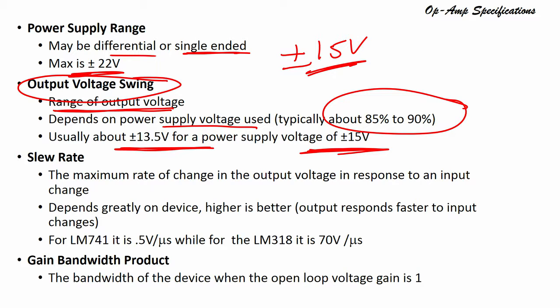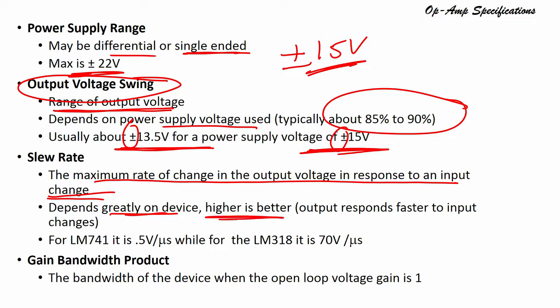Slew rate is the maximum rate of change of the output voltage in response to an input change. It depends greatly on the device — higher is better because a higher slew rate means the output responds faster to input changes. In other words, slew rate indicates how fast the output changes when the input changes.